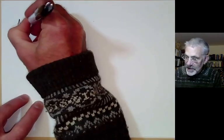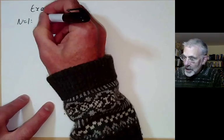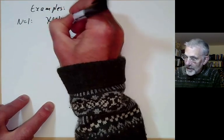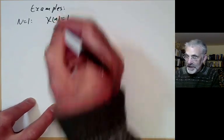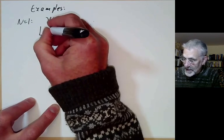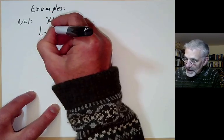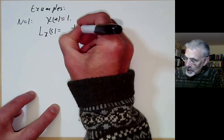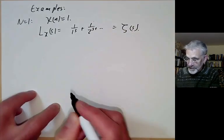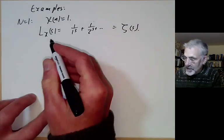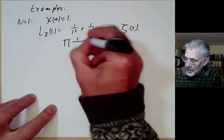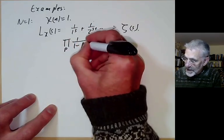For n equals 1, the only Dirichlet character is chi(n) equals 1 for all n, since chi(1) equals 1 and it is periodic with period 1. The Dirichlet series L(chi, s) is just 1 over 1 to the s plus 1 over 2 to the s and so on, which is the usual Riemann zeta function. It has the usual Euler product, product over p of 1 over 1 minus p to the minus s.